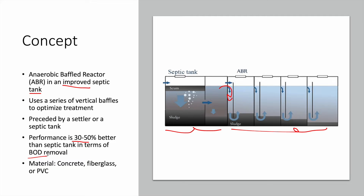An ABR system also achieves a high reduction of total suspended solids, making it ideal when using a wetland in secondary treatment, as it protects the wetland from clogging and failure. Materials that can be used include reinforced concrete, masonry, fiberglass, prefabricated systems, and even PVC. This system is highly modular, so additional baffles can be added if there is a higher flow or higher load entering the system.